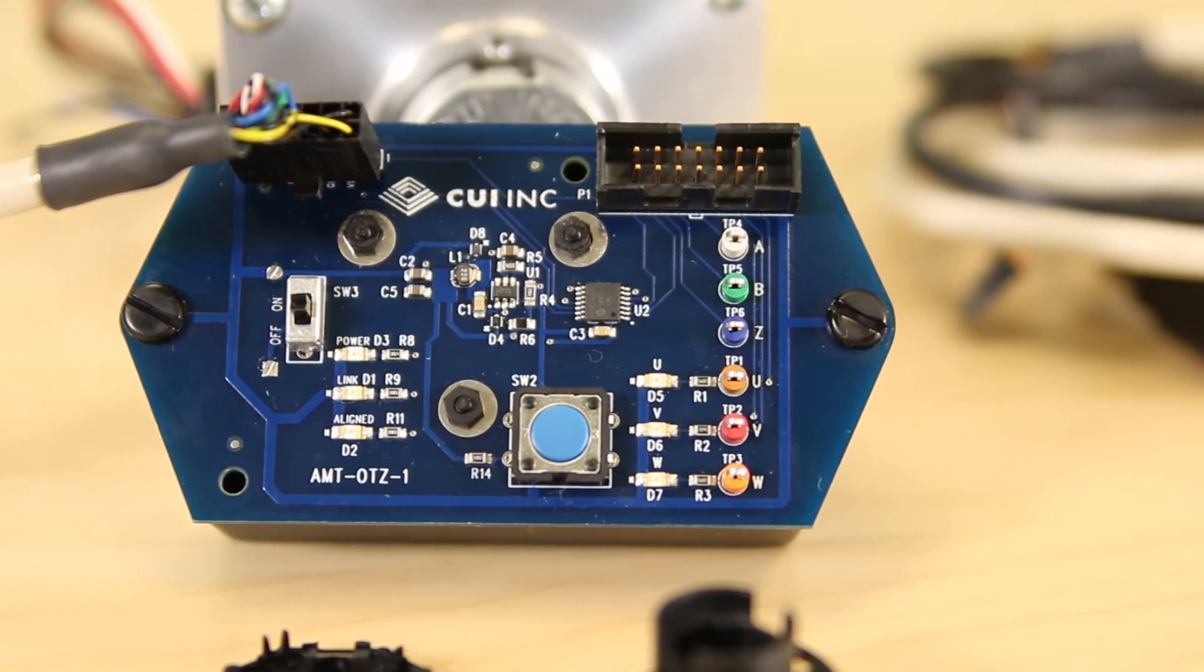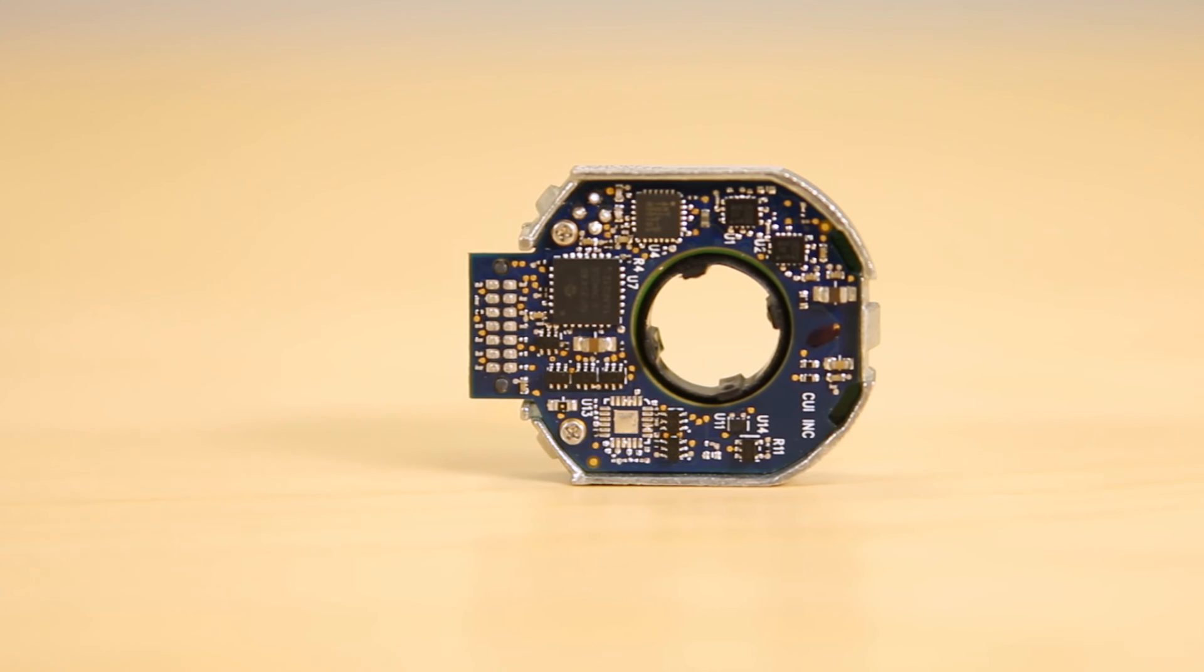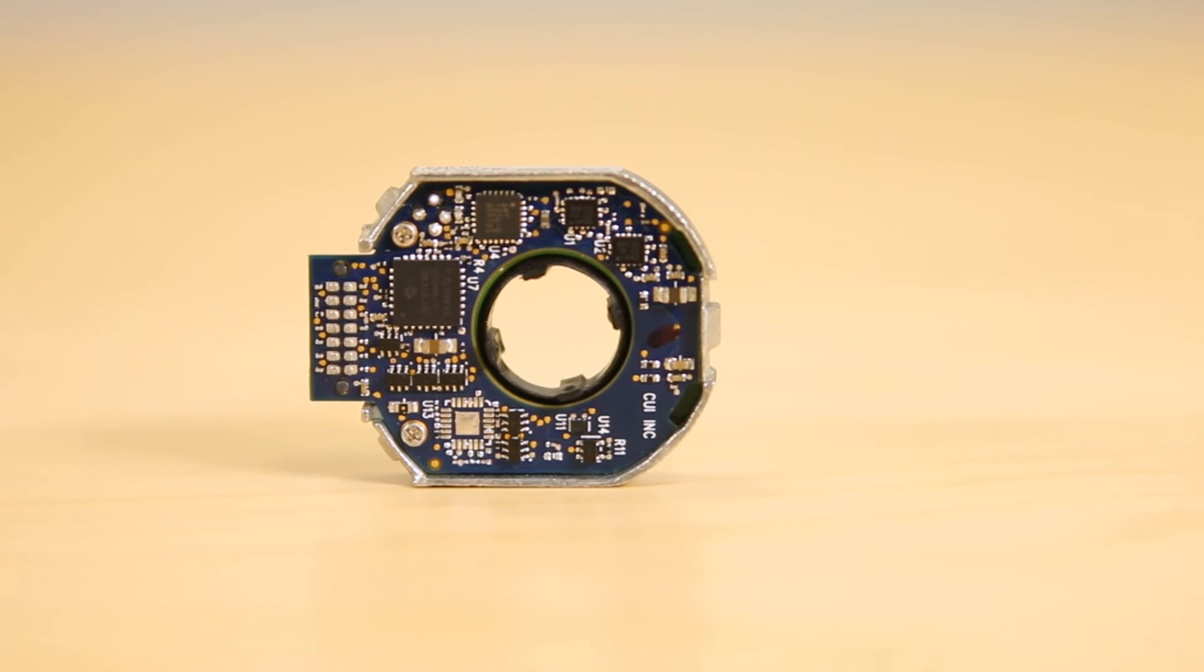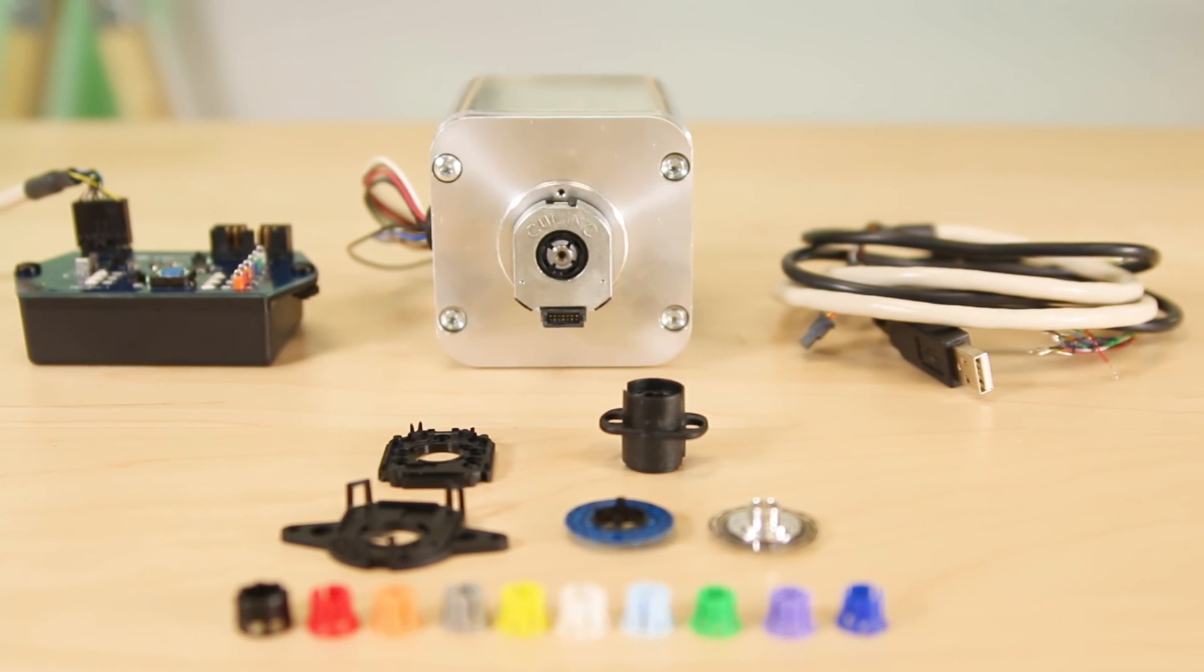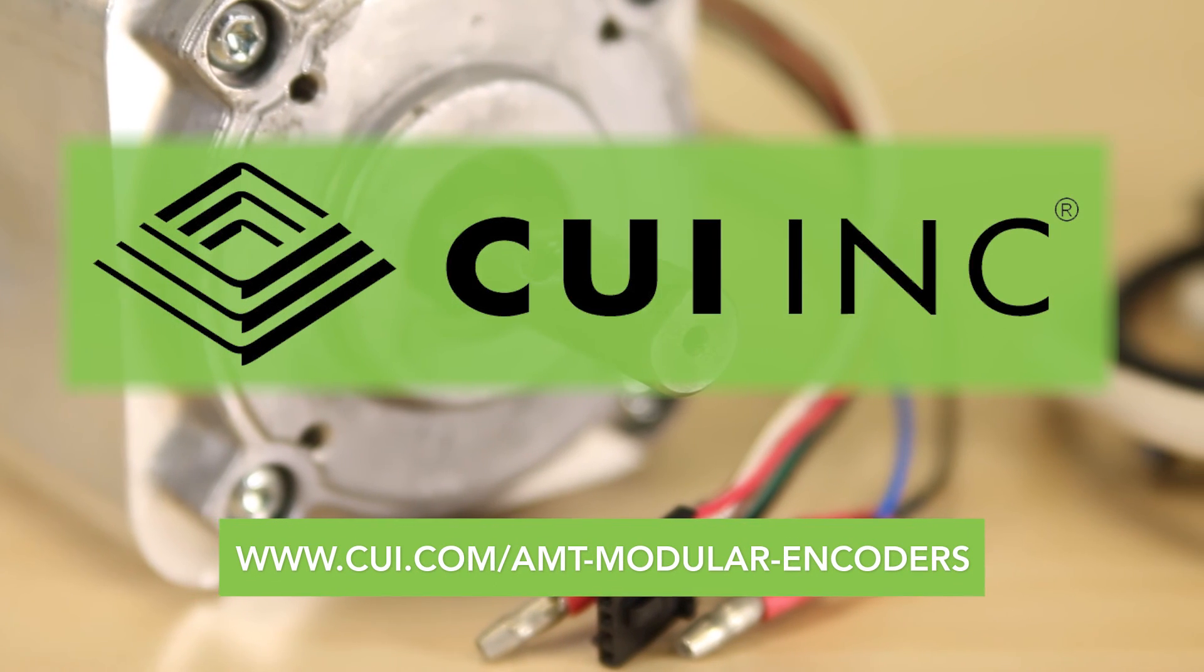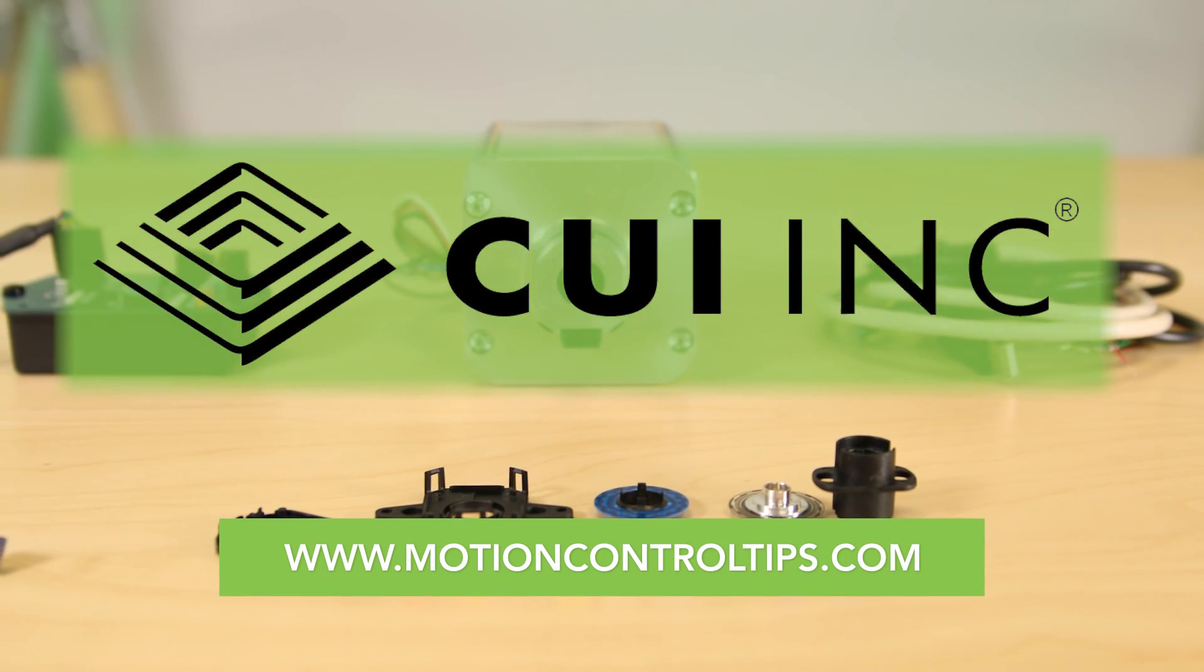Combined with high accuracy and simple assembly, the AMT31 works in a range of industrial, automation, robotics, and renewable energy applications. To learn more about CUI's AMT31 series, visit cui.com/amt-modularencoders or motioncontroltips.com. Thanks for watching.